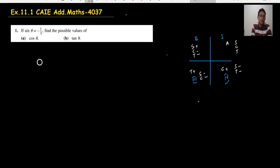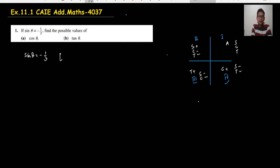So sine theta is minus 1 upon 3 — first of all you have to decide the possible quadrant. The possible quadrants are the third quadrant and the fourth quadrant, because in the third and fourth quadrant, sine is always negative.